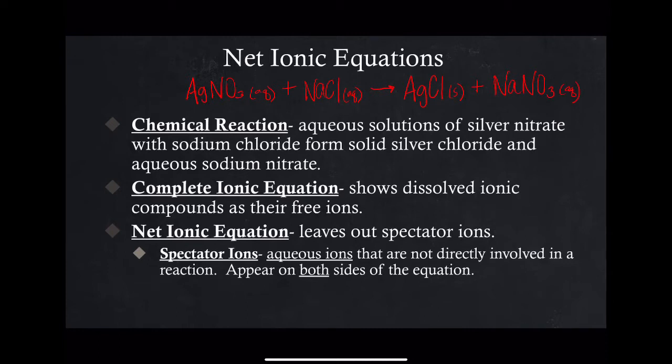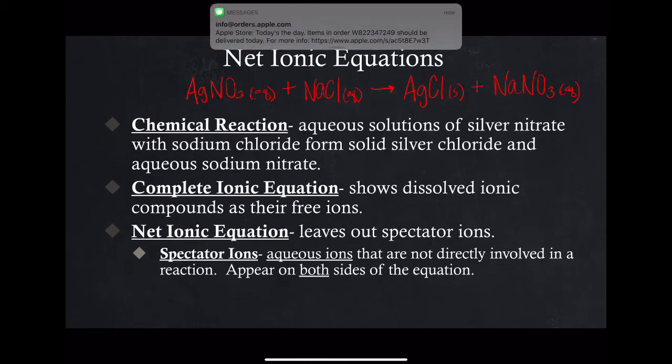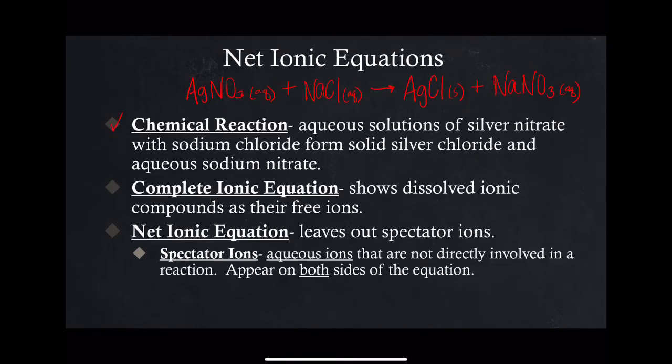I think I've written that equation out correctly. The next thing I want to do is make sure I have that equation balanced, and it looks to be balanced. One silver, one nitrate, one sodium, one chlorine. So that's pretty easy. That is writing that chemical reaction. You should recognize that as a double displacement reaction. The silver re-paired with the chlorine, and the nitrate re-paired with the sodium. So that's the first step, writing the chemical reaction.